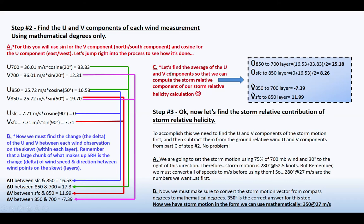And then in part C, let's find the average of the U and V components so that we can compute the storm relative component of our storm relative helicity calculation. So how that's done is then you have to take U bar. And what that is, is it's the average between the two layers given. So the average of the U component between 850 to 700 is 16.53 plus 33.83.